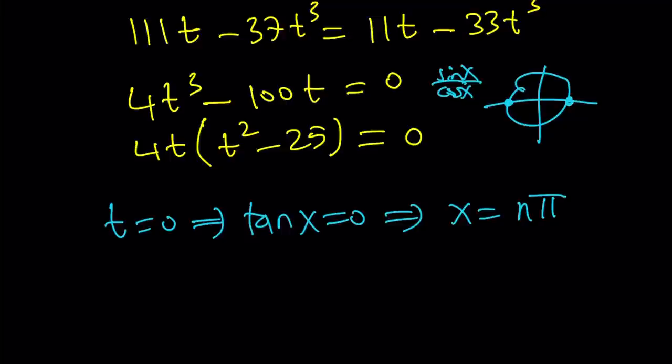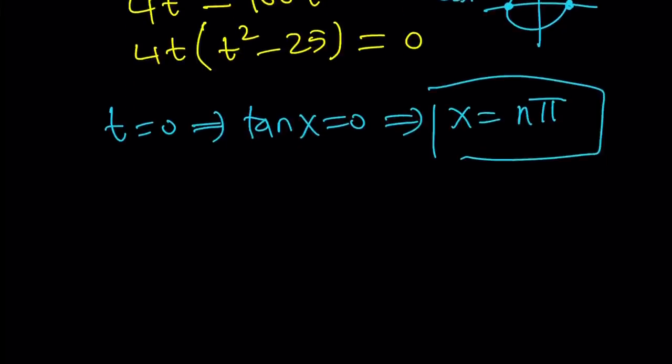We have to go back and obviously check the original one, make sure that nothing is undefined, because with tangent, you've got to be careful. There are asymptotes. There are some issues with tangent, graph of tangent. But this should work because 3 pi and pi are both good.